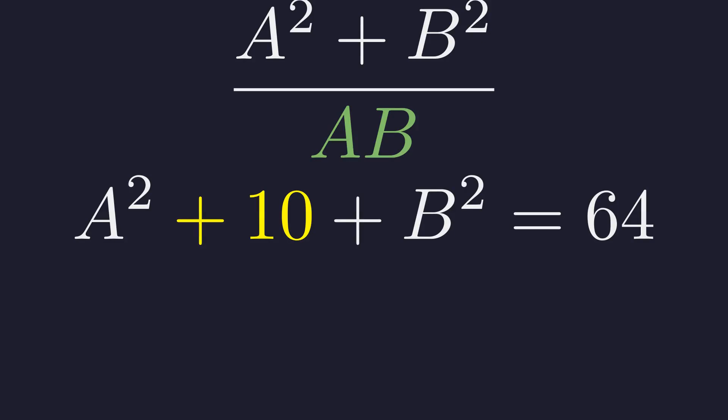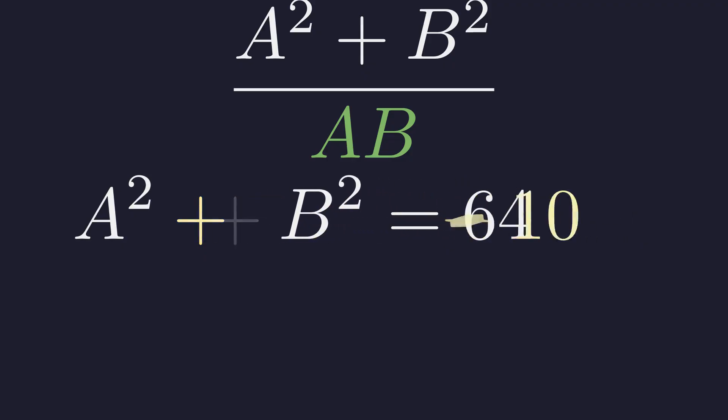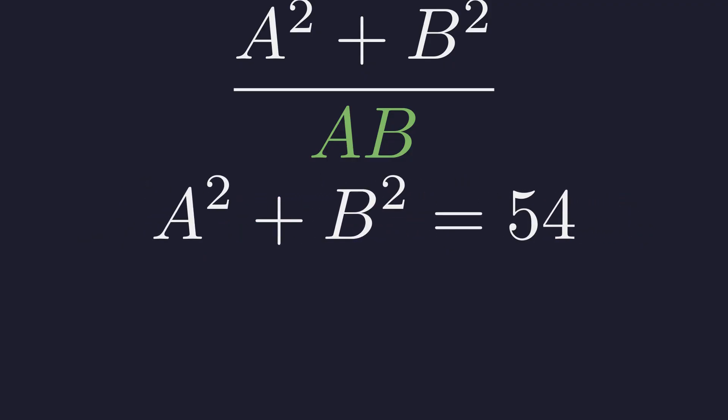To isolate A squared plus B squared. Subtract 10 from both sides. Moving the 10 over. And 64 minus 10 gives us 54.